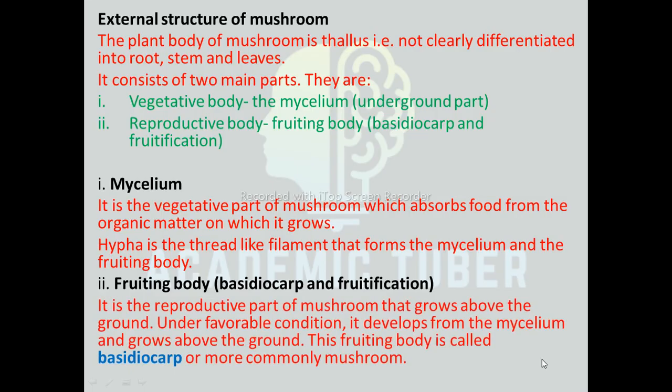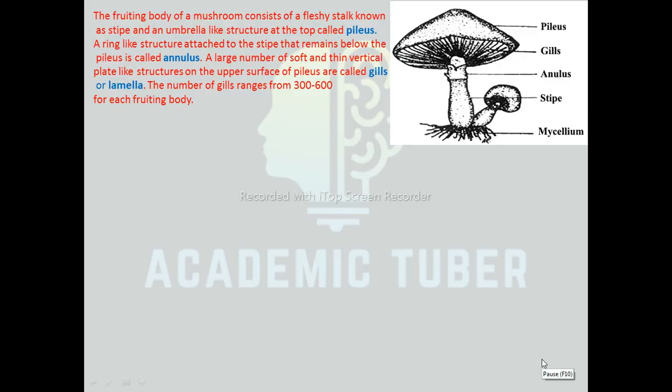Fruiting Body (Basidiocarp / Fructification). It is the reproductive part of mushroom that grows above the ground. Under favorable conditions, it develops from the mycelium. This fruiting body is called Basidiocarp, or more commonly, mushroom. It consists of a fleshy stalk known as the stipe and an umbrella-like structure at the top called the pileus. A ring-like structure attached to the stipe below the pileus is called the annulus. A large number of soft and thin vertical plate-like structures on the under surface of the pileus are called gills or lamellae.